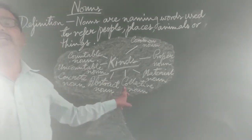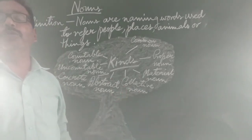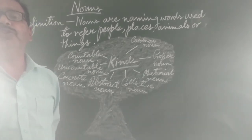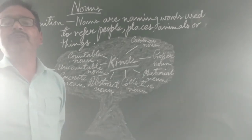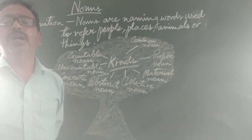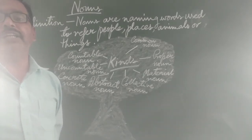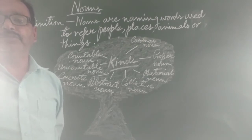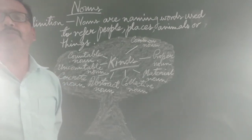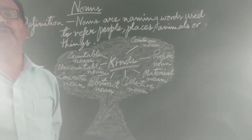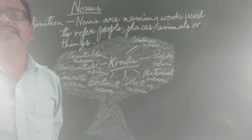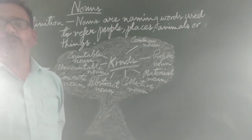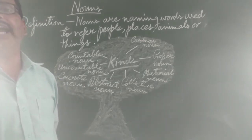Now we will move to Collective Naam. What is a Collective Naam? A group. A Collective Naam refers to a group. For example: a herd of cattle, a swarm of bees, a flock of birds, a team of players, and a colony of ants.